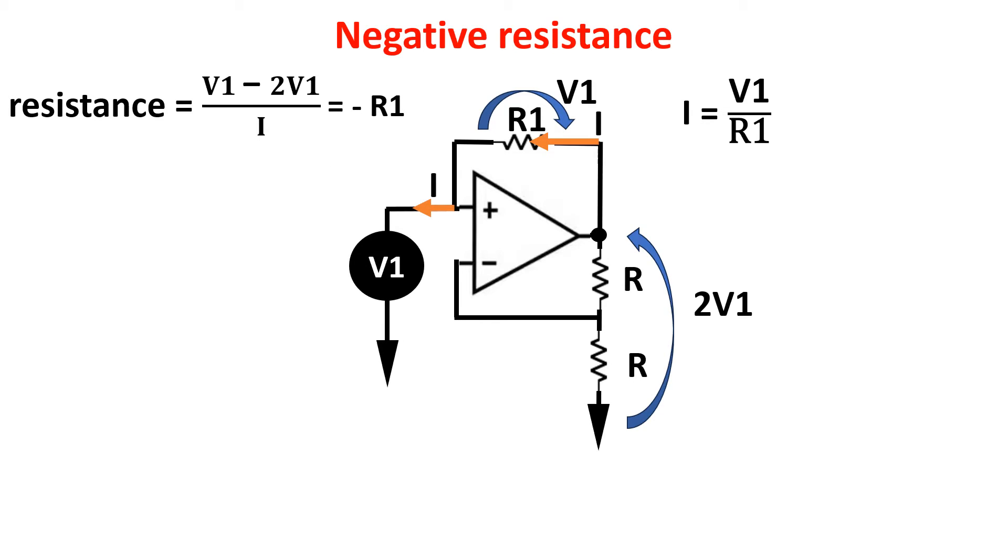So we apply V1 and we get a current flowing out. So the resistance in the non-inverting input of the op-amp is this, and it is negative and equal to minus R1. So with an active element, we can indeed create a negative resistance. In this case, we use an op-amp with both negative and positive feedback, and by choosing the resistors, we define the value of the input resistance of the circuit.